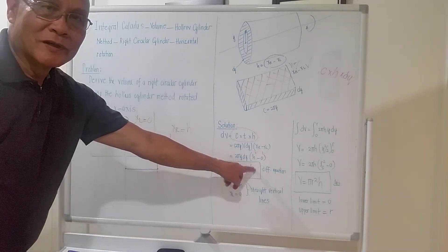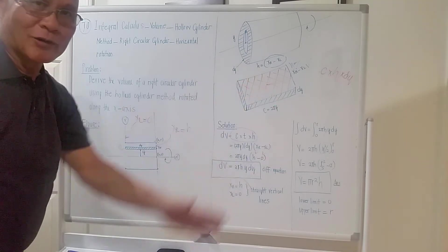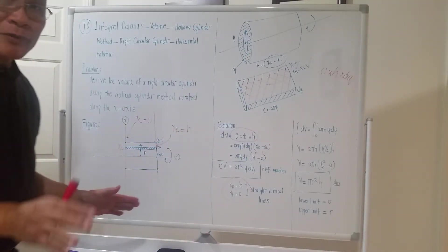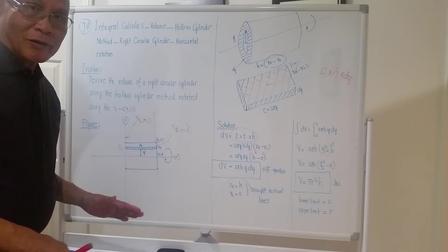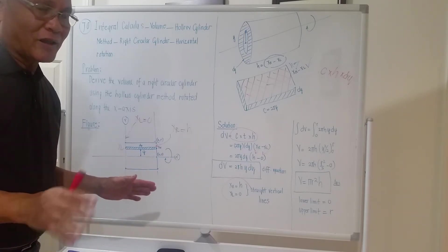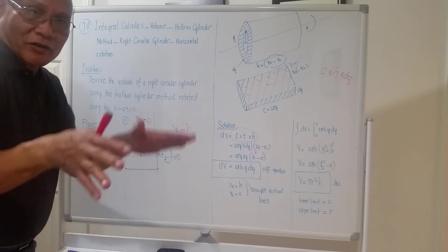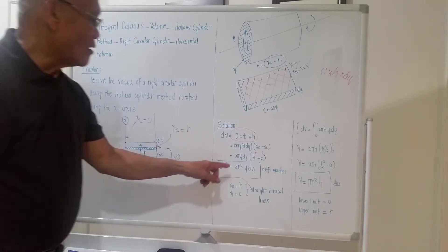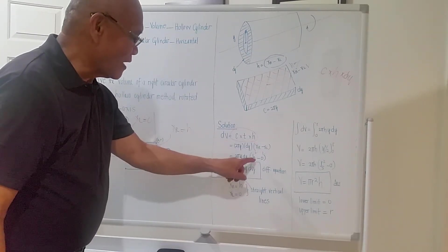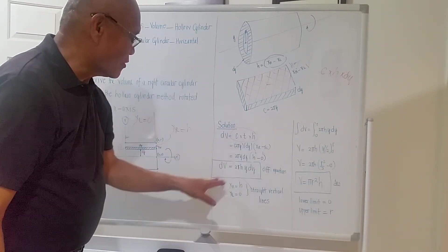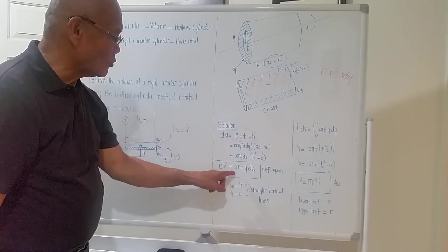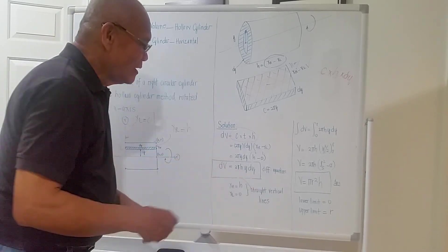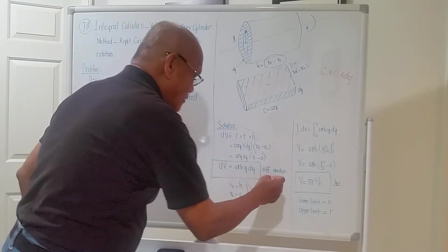That's not calculus — it's analytic geometry. That's why I told you the requirement is that you know the lower mathematics. So the differential volume is now 2πhy · dy. This is a differential equation.